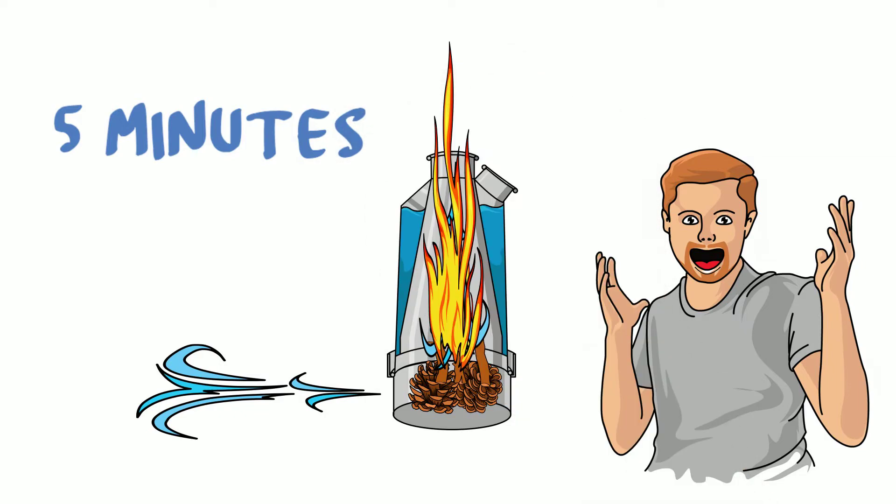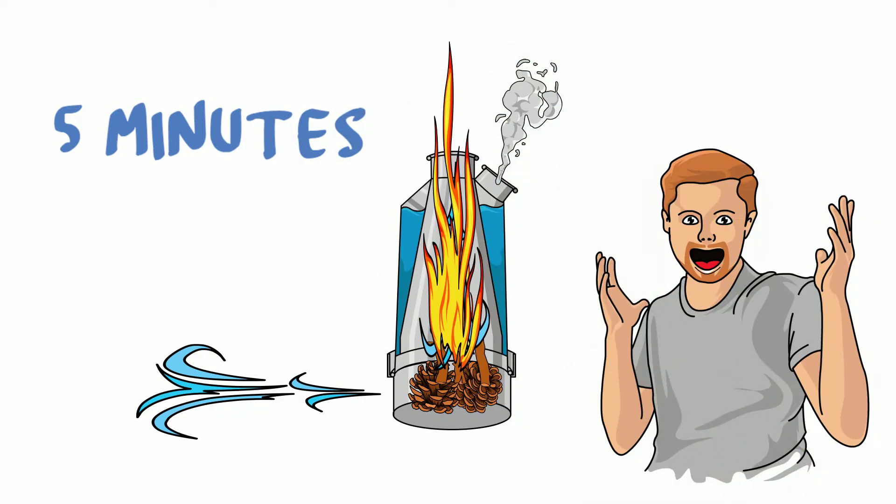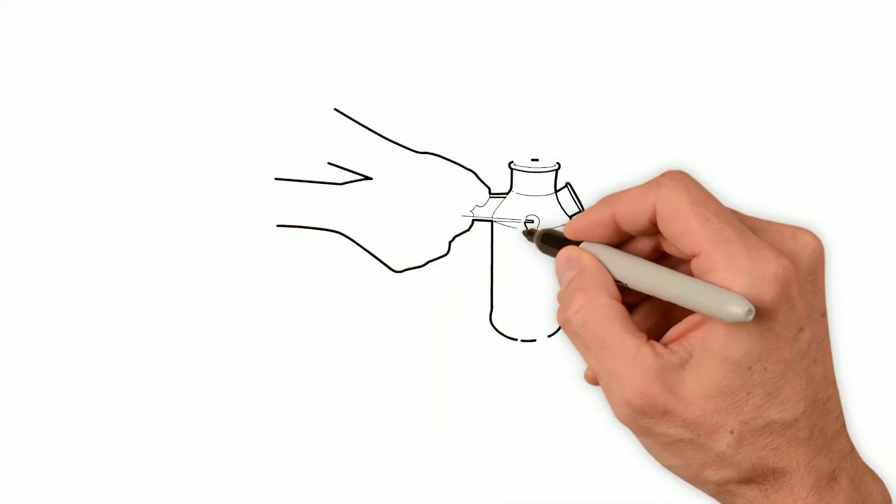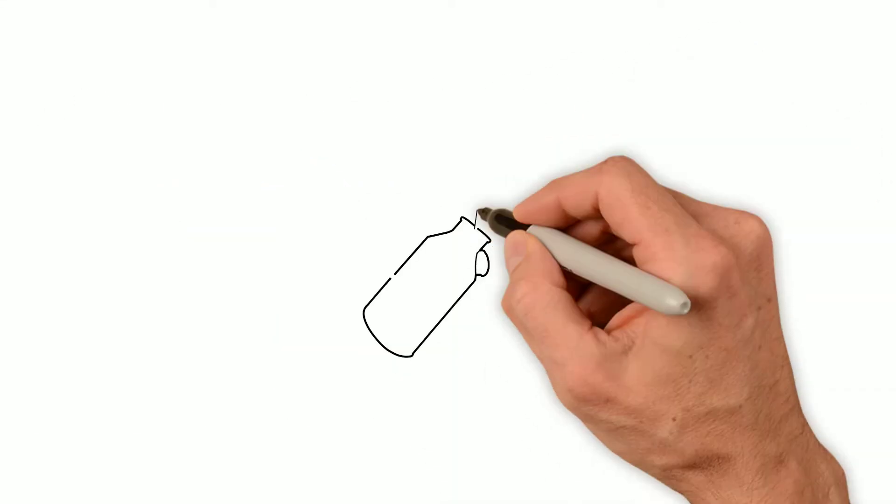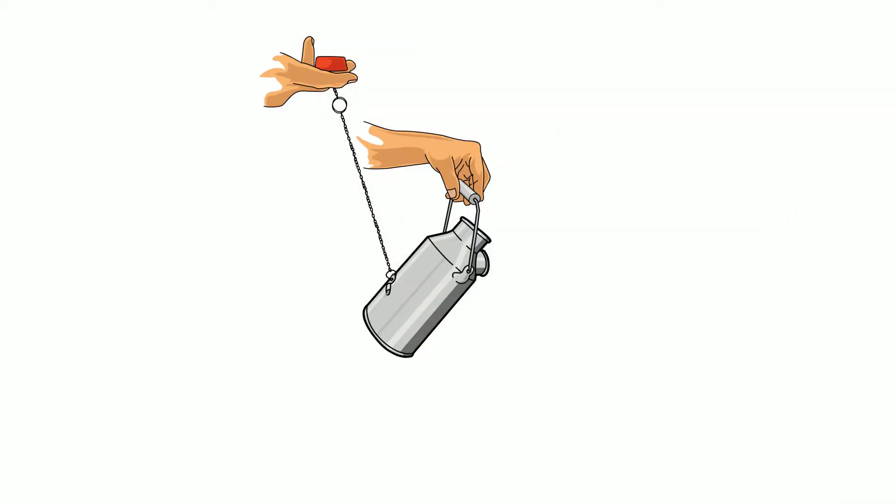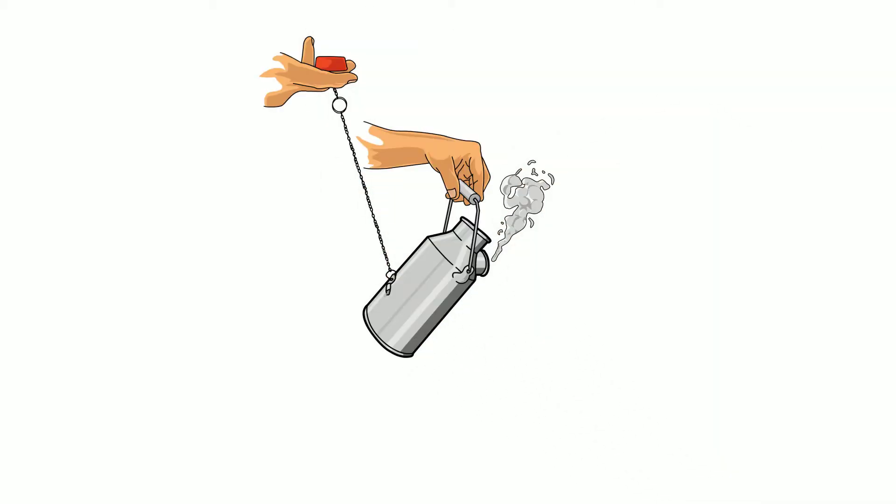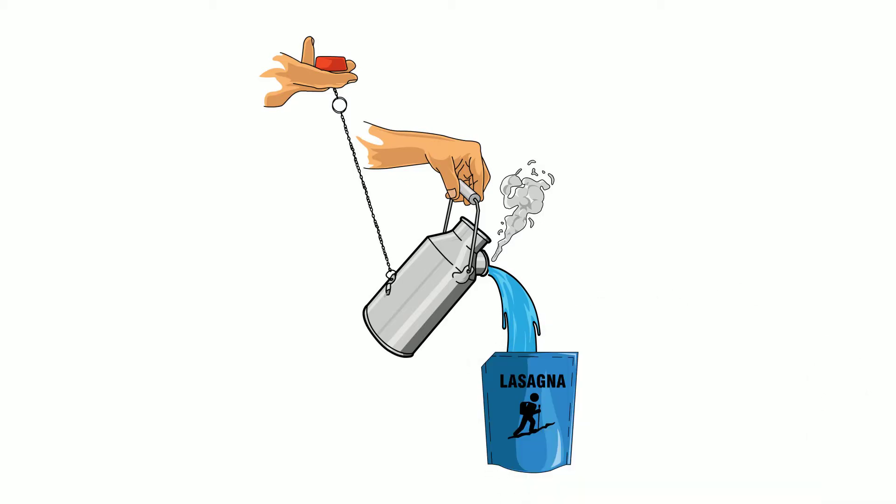Five minutes after they put the kettle on, the water was already boiling. Rick took hold of the sturdy bale handle with two hands, lifted the kettle off the fire base and then, using the stopper on the chain, tilted the kettle to pour boiling hot water into a pack of freeze-dried lasagna.